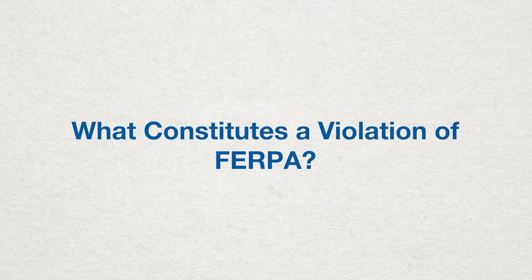What constitutes a violation of FERPA? The Family Educational Rights and Privacy Act, or FERPA, is a federal law that protects the privacy of student educational records. It applies to all schools, colleges, universities, and other agencies that receive funds from the U.S. Department of Education. FERPA gives parents certain rights concerning their children's educational records, like the right to review them and request corrections if needed, while also imposing responsibilities on schools in protecting those same records.